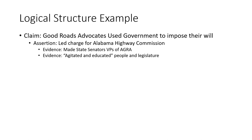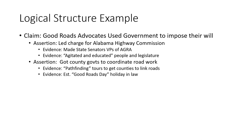One of my assertions is that these advocates led the political charge in Alabama to create the Alabama Highway Commission in 1911, and I tell the story of how they did this. Two pieces of evidence I cite are that the Alabama Good Roads Association appointed state senators as vice presidents, and that various advocates agitated and educated through conventions and publicity stunts toward getting a constitutional amendment to establish the highway commission. I made a second assertion that advocates persuaded county governments to coordinate local road work. My evidence: the story of seven so-called pathfinding tours to persuade counties to link their roads to those of their neighbors in order to form state highways, and the story of proclaiming Good Roads Days in which county governments called on citizens to work the roads for three days in August.